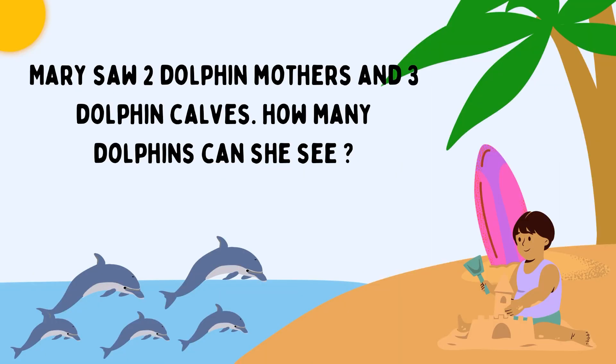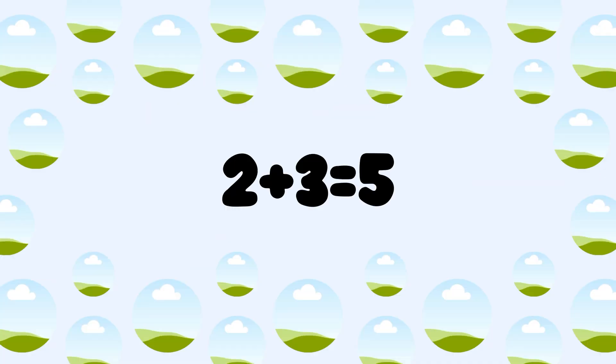Mary saw 2 dolphin mothers and 3 dolphin calves. How many dolphins can she see? Let's count. 2 dolphin mothers plus 3 dolphin calves. 2 plus 3 is equal to 5. Total 5 dolphins.